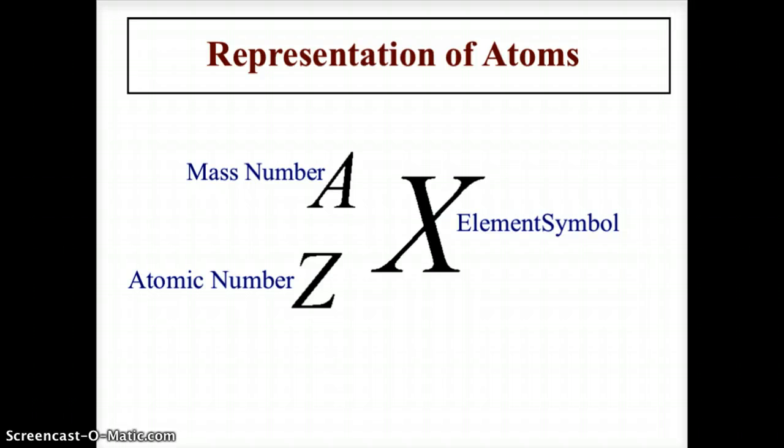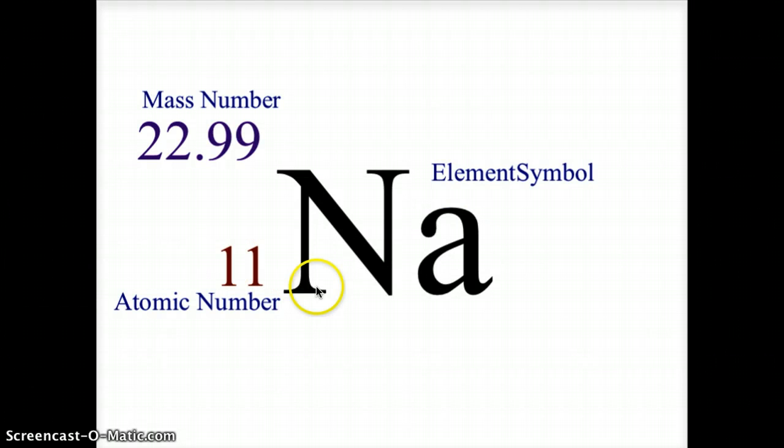It's usually mass number on top, atomic number on the bottom, and the symbol to the right. So an example of that would look like this, where we have the element symbol Na for sodium. The mass number would be superscripted, 22.99, and the atomic number is 11. Remember that 22.99 would be rounded to 23.